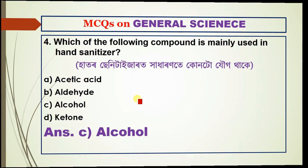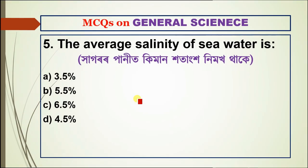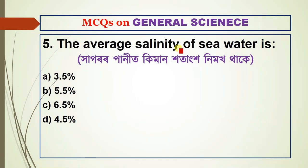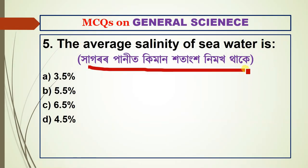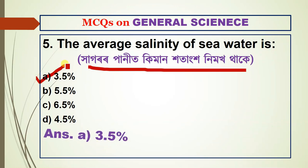Question number five: what is the average salinity of sea water? The answer is 3.5 percent — option E.